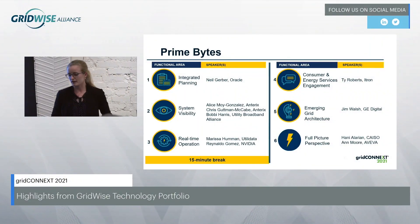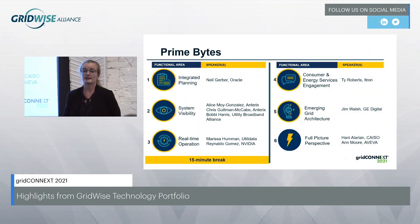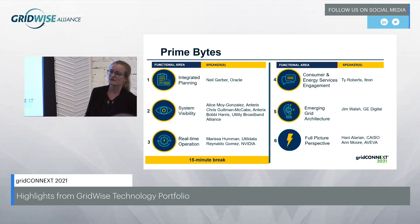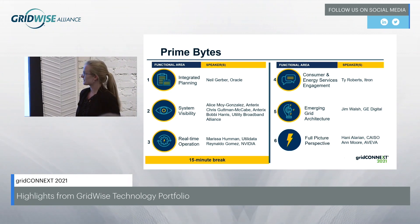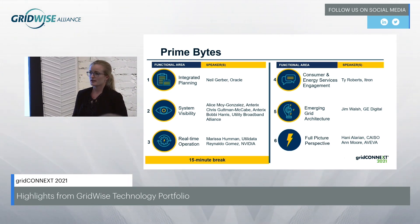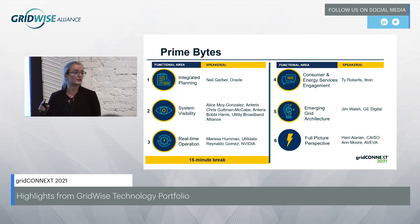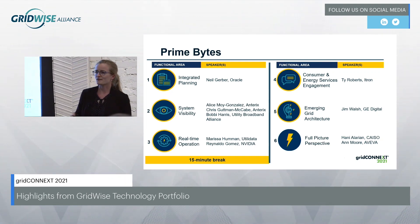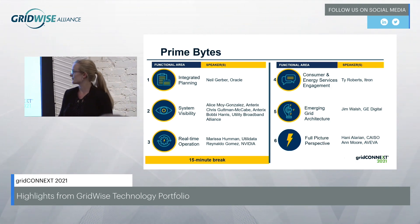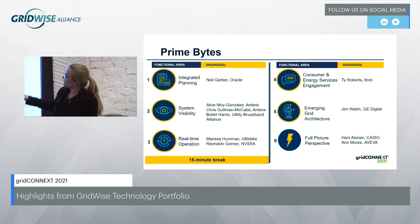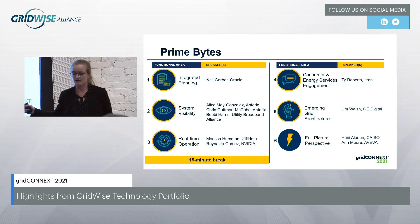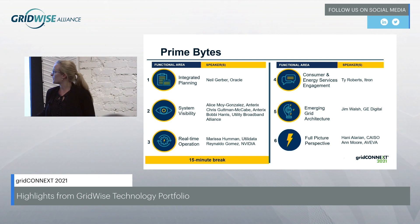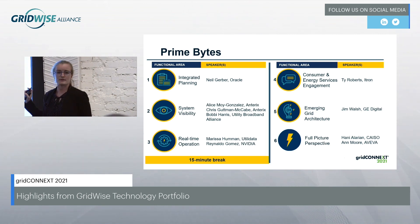At this point, I'm excited to kick off the next six 15-minute lightning round meets TED Talk meets grid overview talks. These are generally organized by walking through functional areas, each a different flavor — a different bite of the grid apple. We're going to have three 15-minute talks, followed by a 15-minute break to let you stretch your legs, and then close out with another three 15-minute talks.